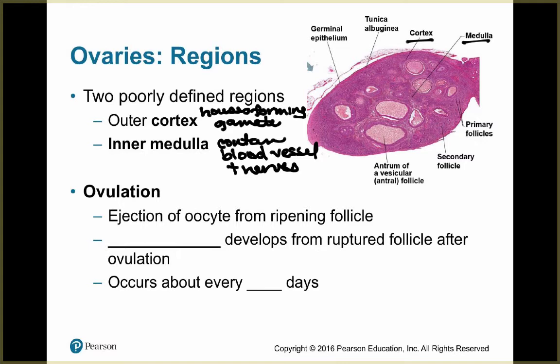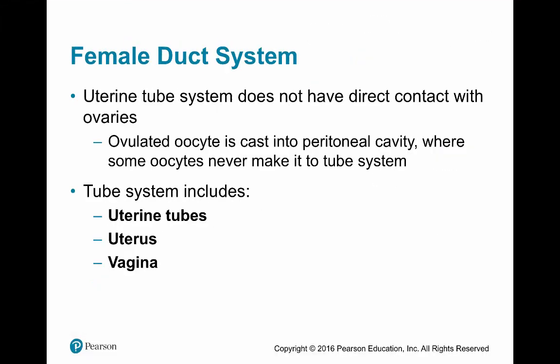Once the oocyte is ejected and becomes the ovum, what's left of the follicle turns into the corpus luteum. This process occurs on average every 28 days. The uterine tube system does not have direct contact with the ovaries — the ovulated oocyte is cast into the peritoneal cavity, and some oocytes never make it to the tube system at all.